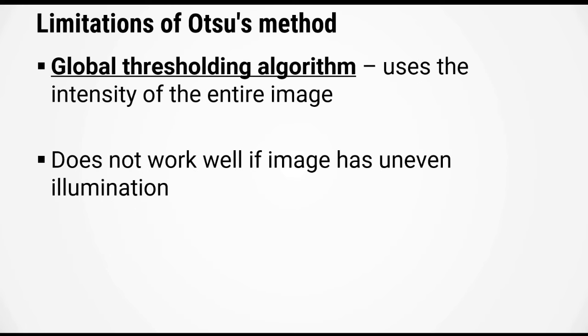Finally, Otsu's method is a global thresholding algorithm which means it uses the intensity of the entire image to figure out the threshold intensity. So this algorithm does not work well if the image has uneven illumination causing part of the image to be brighter than the other.